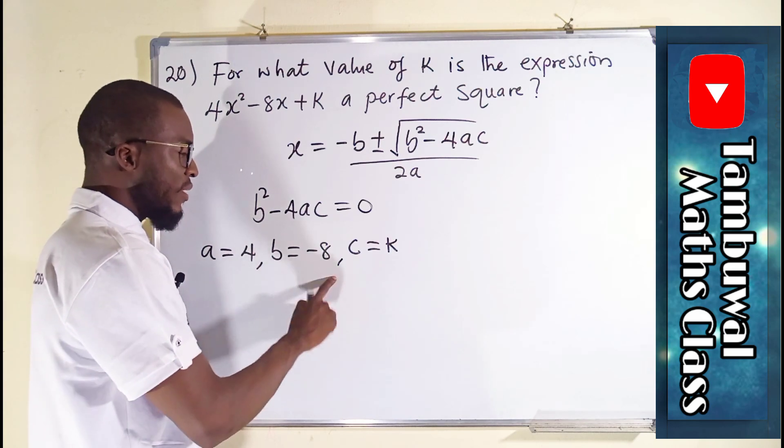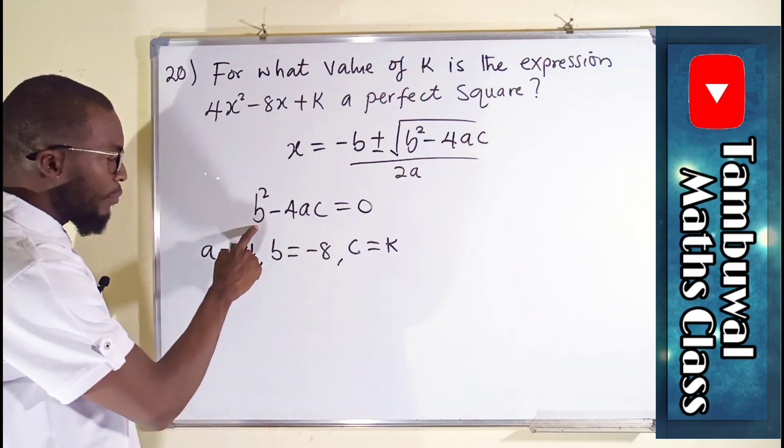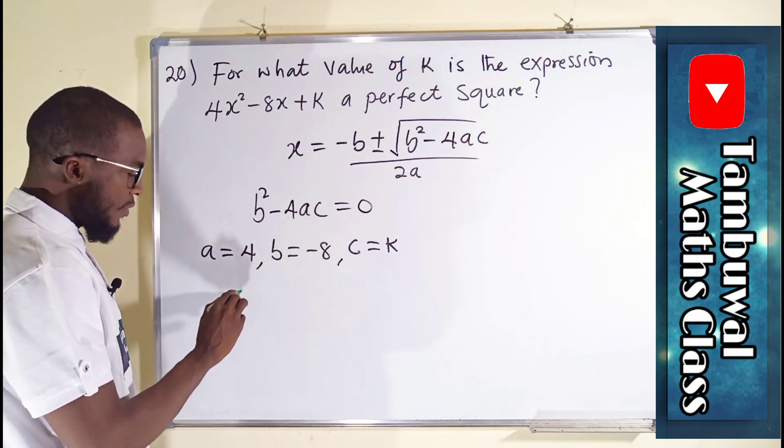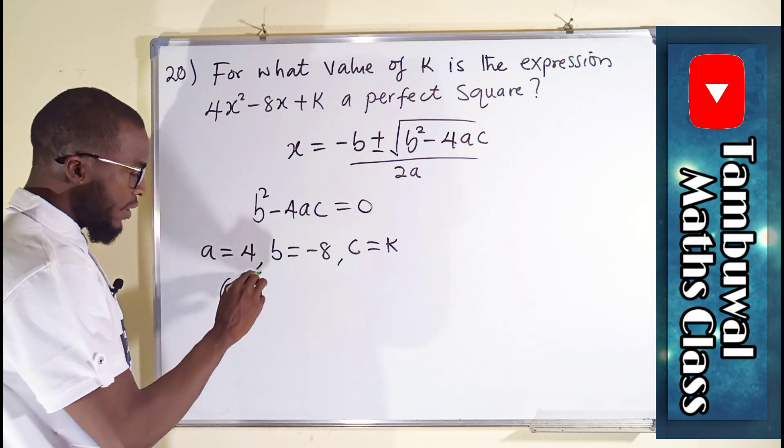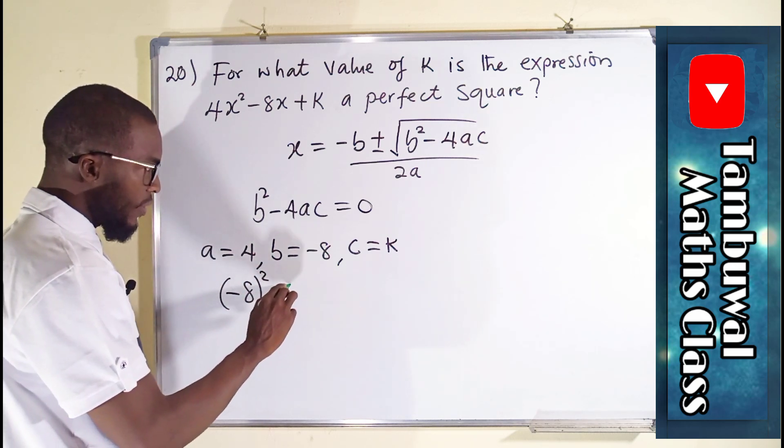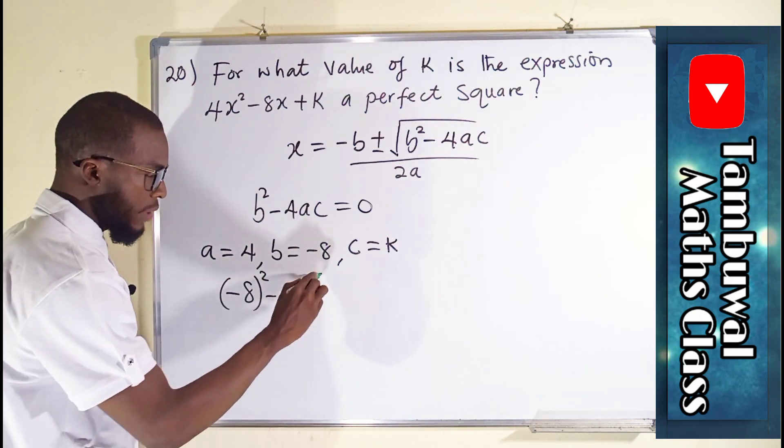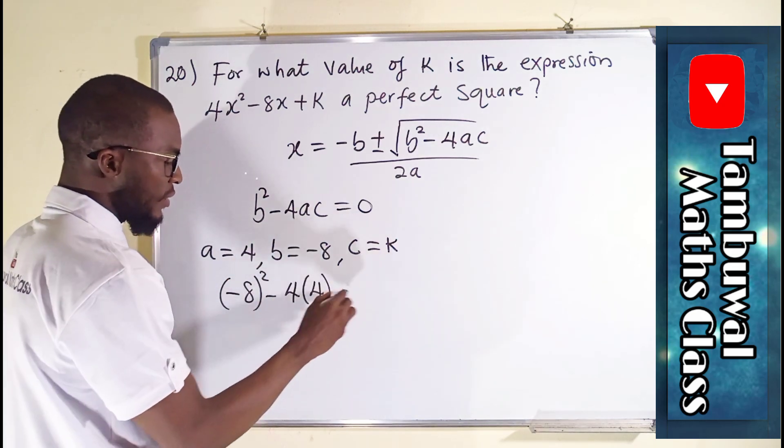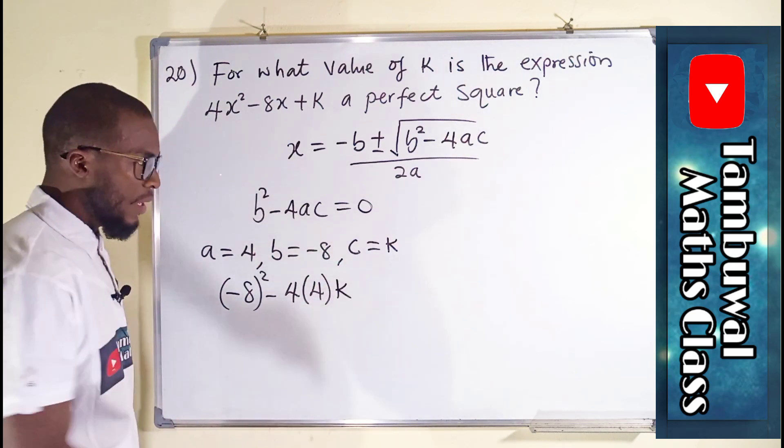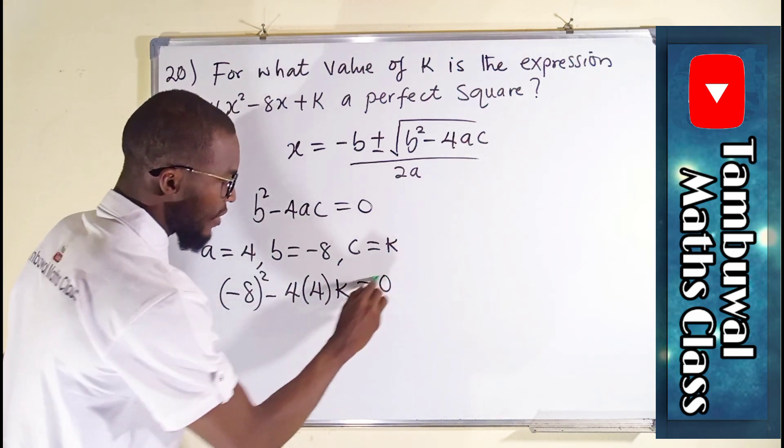So now let us substitute this here. b squared is what? Minus 8 all squared minus 4 times a is 4, c is k. And this is equal to 0.